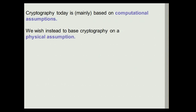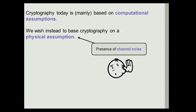But today I want to do something different. I want to talk about basing cryptography on physical assumptions. In particular, the physical assumption we are going to consider is the availability of a communication channel which is subject to noise. This noise might come, for example, from interference or from some other physical phenomenon that we want to exploit.